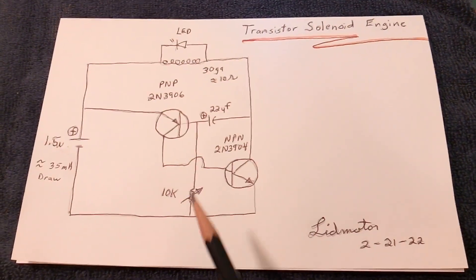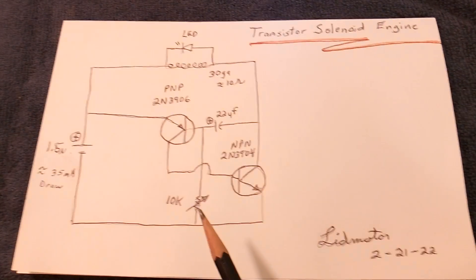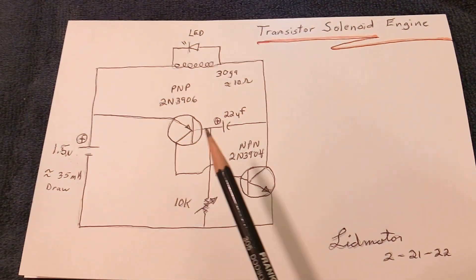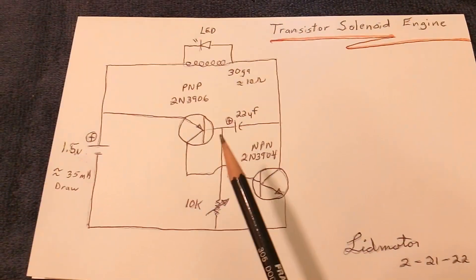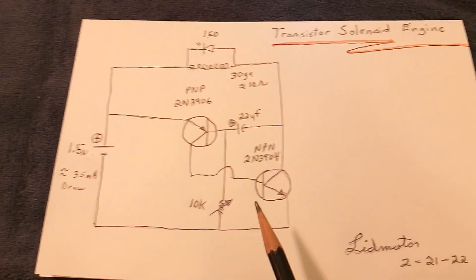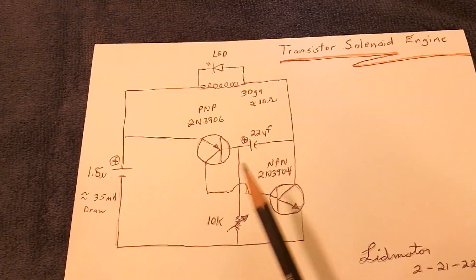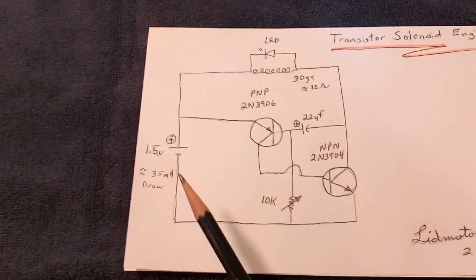There's a potentiometer here that goes from the base of the PNP down to ground, and then a capacitor right here that's different than the other circuits I've shown. It's not great the way I've got it set up.